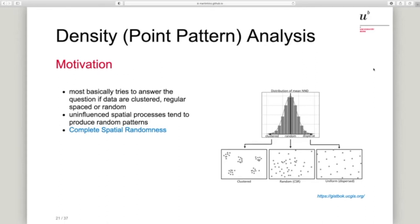The most basic and often most relevant question is: are data clustered? Are they uniformly distributed with equal distances? Or are they random in the sense of complete spatial randomness? You can look up here the Wikipedia page, I've linked that here.